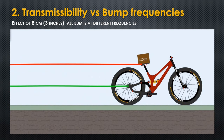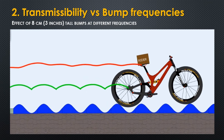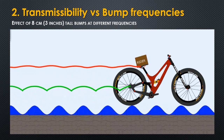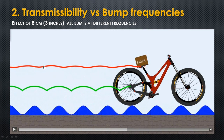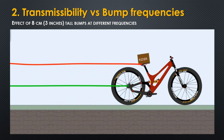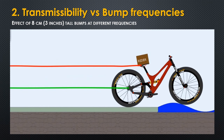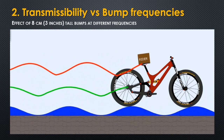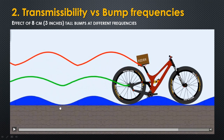Now we are going to approach high frequency bumps. As you can see, the suspension is now tracking the bumps and isolating them — the transmissibility is quite low. Now we are going to approach a very special bump frequency. As you can see, at this type of bump frequency the suspension actually amplifies the bumps — the red line is higher, bigger than the actual bump.